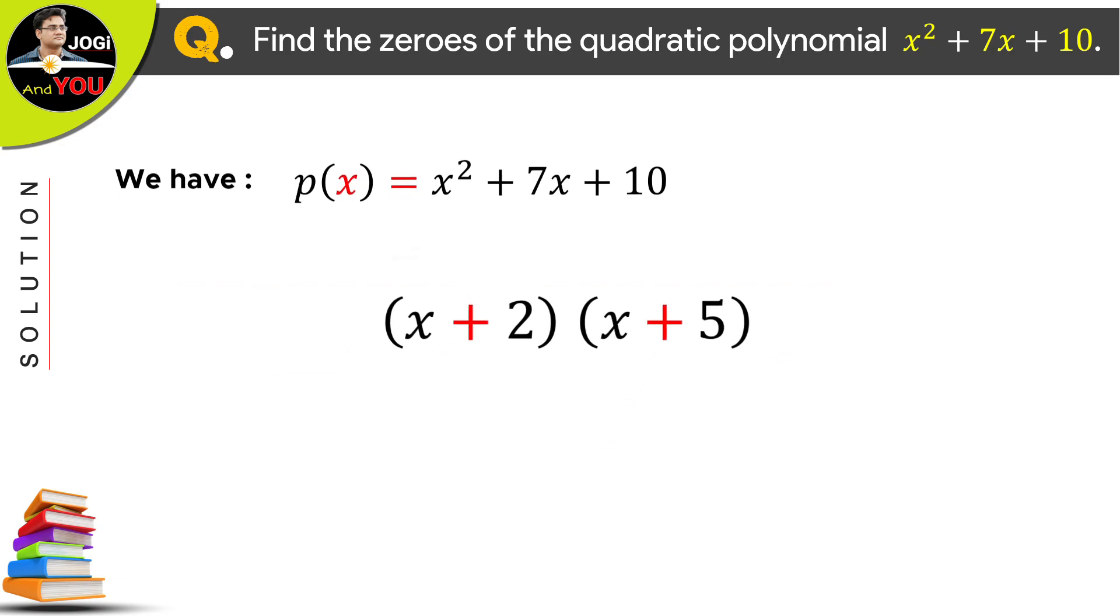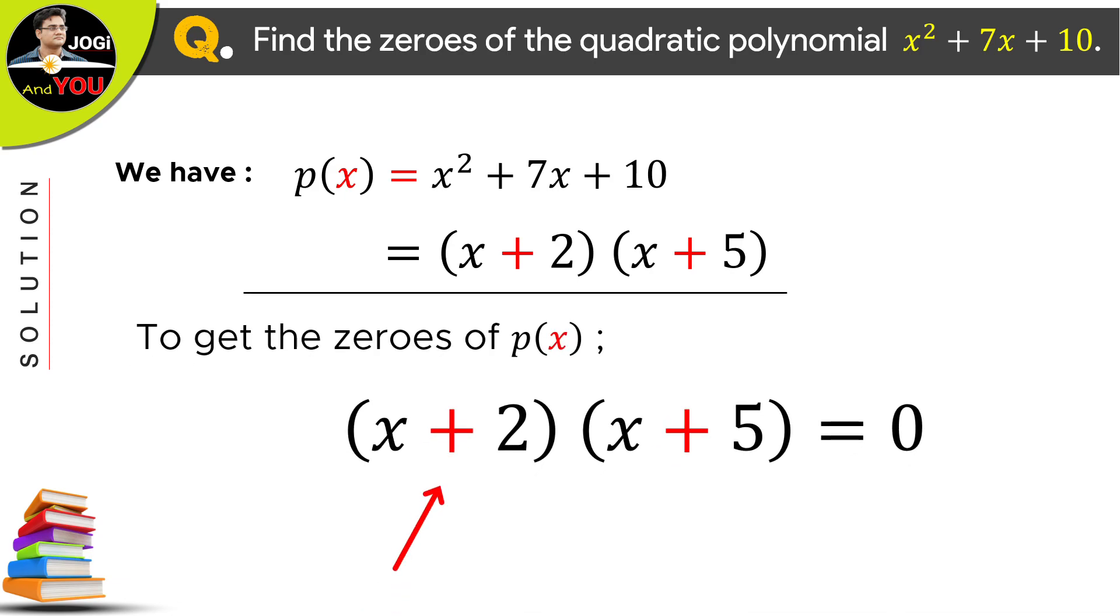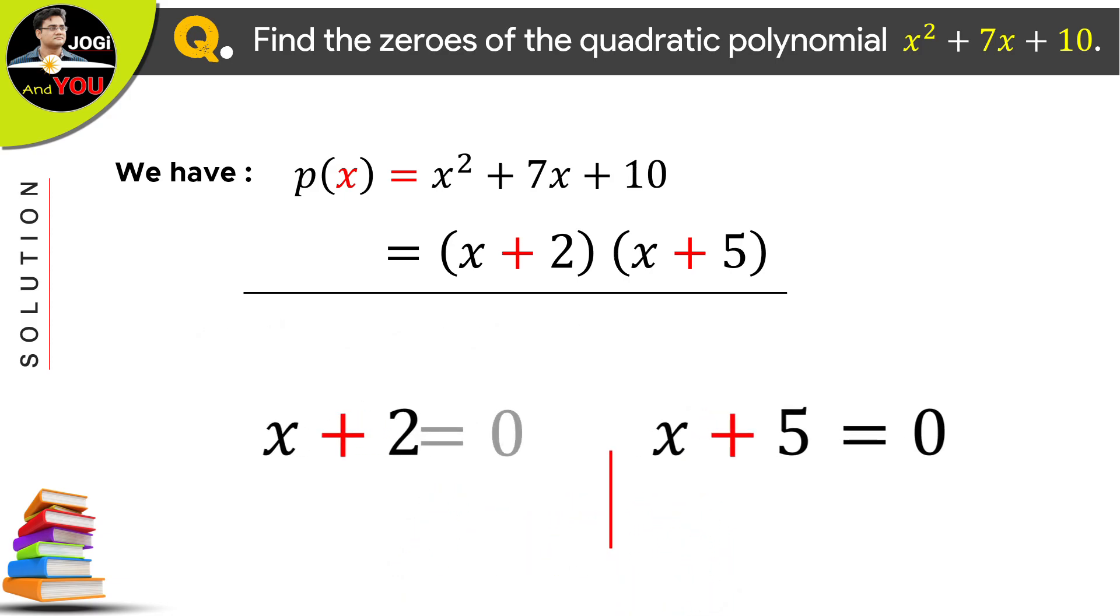Keep these things aside here. And to get the zeros of the given polynomial, we write it as 0. For this, once, this bracket will be written equal to 0. And the second time, this one. Something a bit like this.